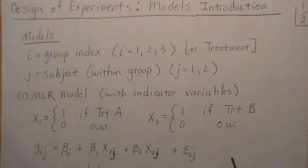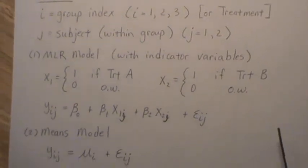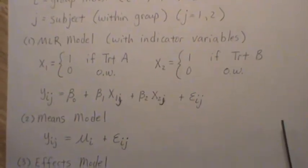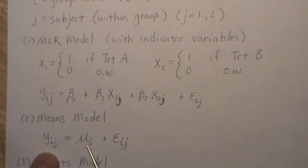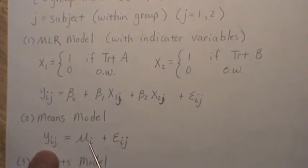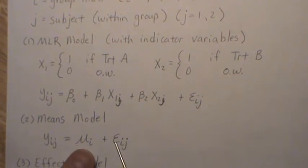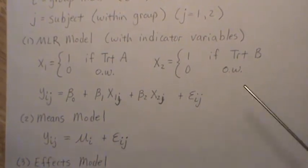There's what's called a means model. So each observation has an overall treatment effect, and then it fluctuates within that treatment. So if treatment A has a mean effect of five, and then there's variance within that, and then say treatment B has a mean effect of 10, and then they fluctuate within that, it's called the means model.